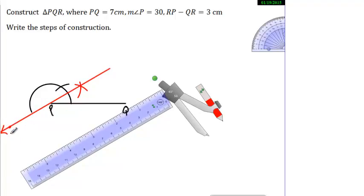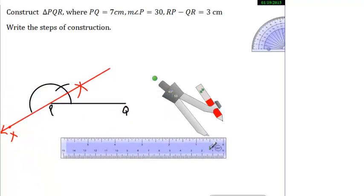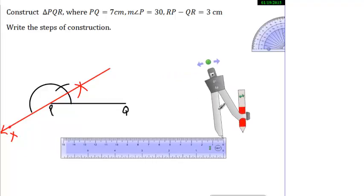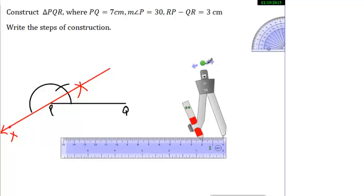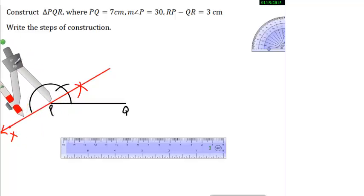I will name here X and I will name here N. Now what is the RP minus QR? I have been told it's 3. So what I will do, I will take my scale and take the measurement of 3 centimeters. So I will put my rounder here and click here at 3. It's 3.1, I think it's fine. If there is a difference of 0.1 that doesn't matter.